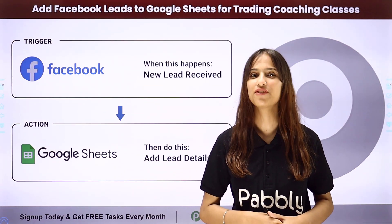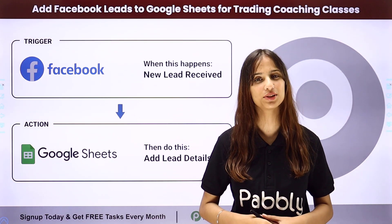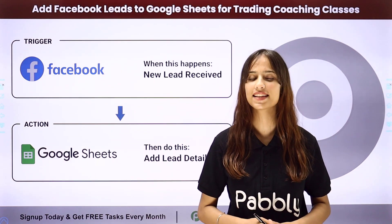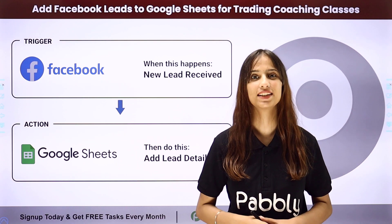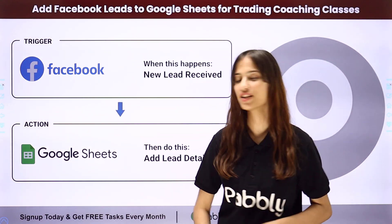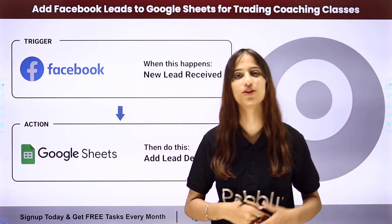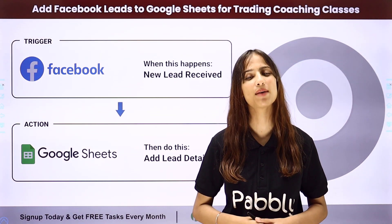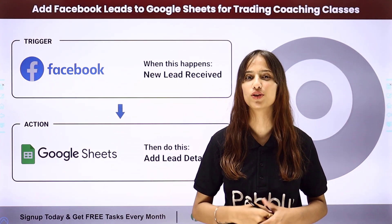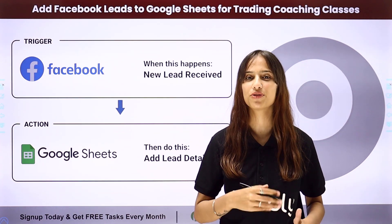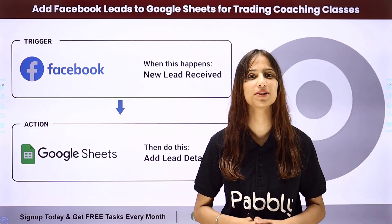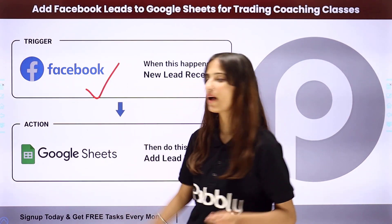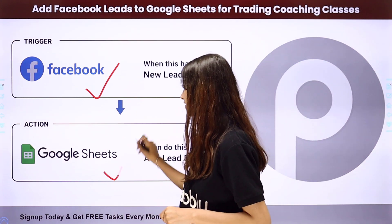My objective is that whenever I receive a new lead through Facebook lead ads, I want to add the lead details in a Google Sheet. To do this I need to build a connection between these two applications, for which I am going to use the automation software Pabbly Connect. My trigger application will be Facebook Lead Ads and my action application will be Google Sheets.